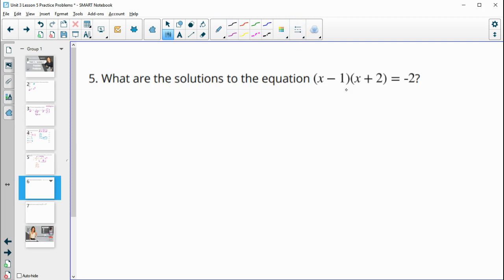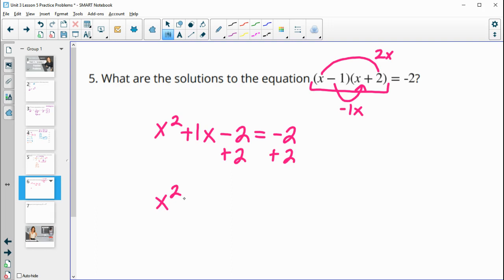Number 5, what are the solutions to this equation? So we'll multiply this out. So x times x is x squared. Then we'll have x times 2, which is 2x. We'll have negative 1 times x, which is negative 1x. When we combine those like terms, we get plus 1x. Then we have negative 1 times 2, which is negative 2. And then we have the equals negative 2. So I'll add 2 to both sides. So we have x squared plus 1x. And then negative 2 plus 2 is 0. And negative 2 plus 2 is 0. So we end up with x squared plus 1x equals 0.